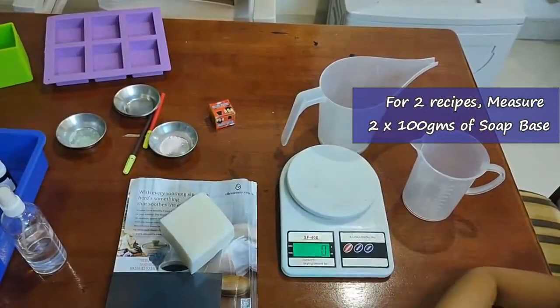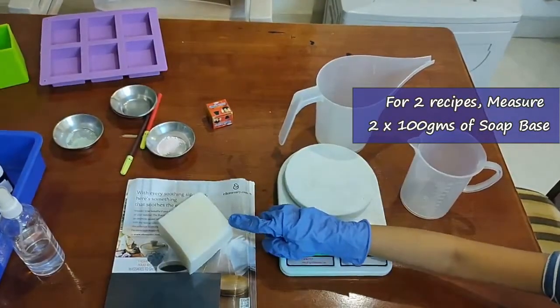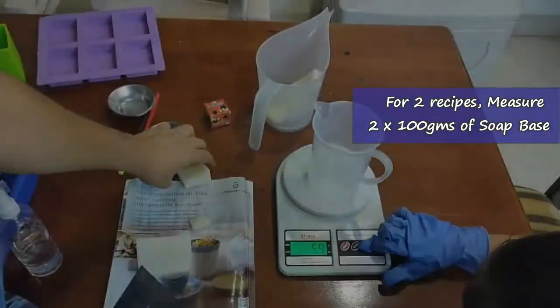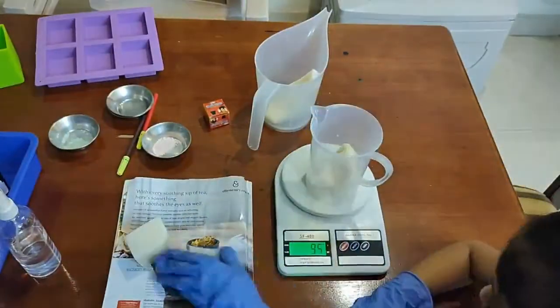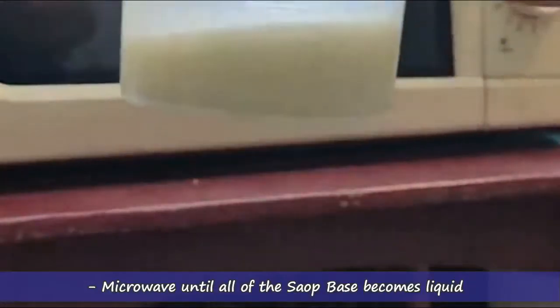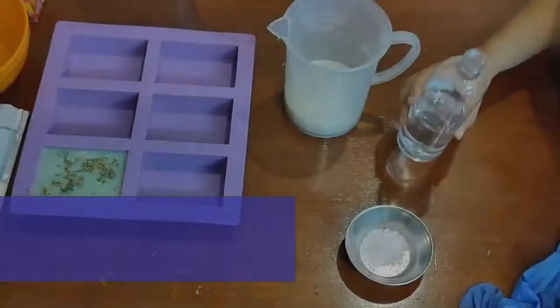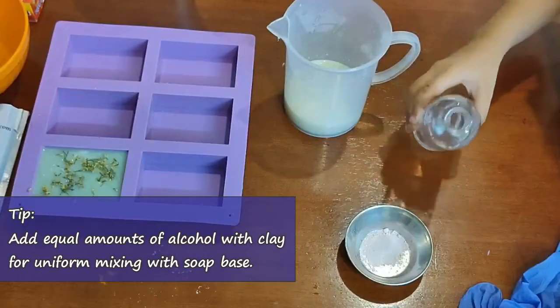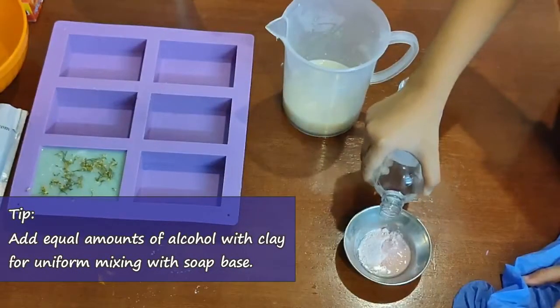Now we put 100 grams of soap base in each bowl. Now we are adding the milk scrub.